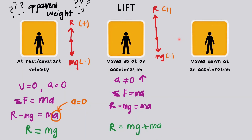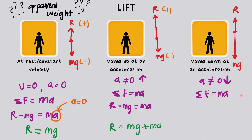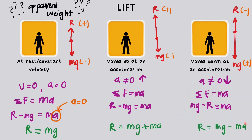When the lift moves downward at an acceleration, the resultant force is in the downward direction. Applying Newton's second law, we note the acceleration is downward, so weight mg is labeled positive and R is labeled negative. When we substitute and rearrange the formula, we find that the apparent weight of the person when the lift is moving down at an acceleration is decreased by Ma. So the person feels lighter when the lift accelerates downward.